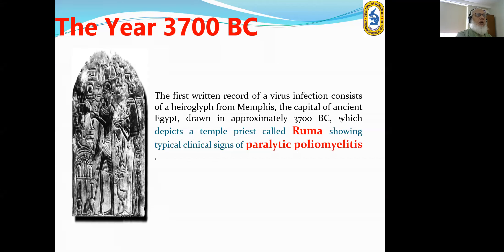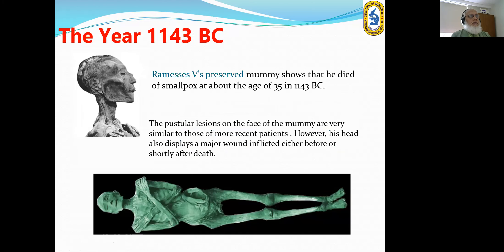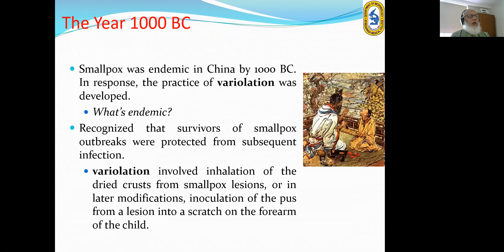Viral diseases are very old. In 3700 BC, before the birth of Christ, there was evidence of an Egyptian mummy showing typical clinical signs of paralytic poliomyelitis. In 1043 BC, a preserved mummy shows that he died of smallpox at age 35. In the year 1000 BC, smallpox was endemic in China and the practice of variolation was developed.